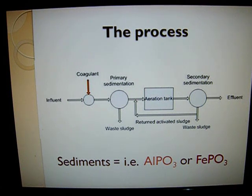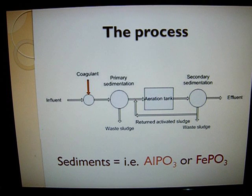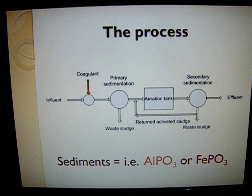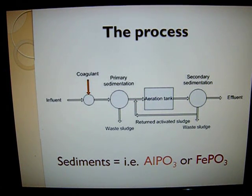A more popular method of phosphorus removal is chemical. A compound is selected that will react with phosphate in wastewater, forming an insoluble product that can then be filtered off. The two most common substances used for this process are alum — aluminum sulfate — and lime, or calcium hydroxide. An alum treatment works in two different ways: some aluminum sulfate reacts directly with phosphate in the wastewater to form insoluble aluminum phosphate. At the same time, the aluminum ion hydrolyzes in water to form a thick gelatinous precipitate of aluminum hydroxide that carries phosphate with it as it settles out of solution.